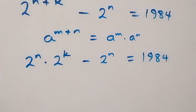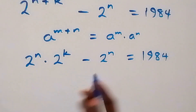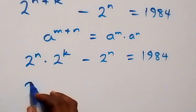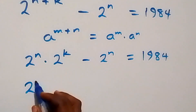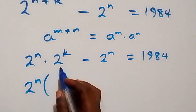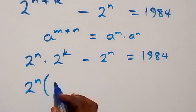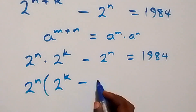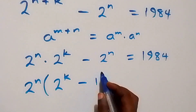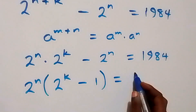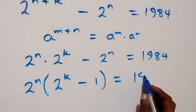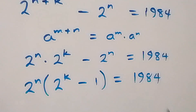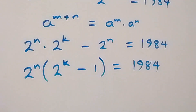From here, 2 raised to power n is common, so we factor that out. We have 2 raised to power n into bracket (2 raised to power k minus 1), now equals one thousand nine hundred and eighty-four.